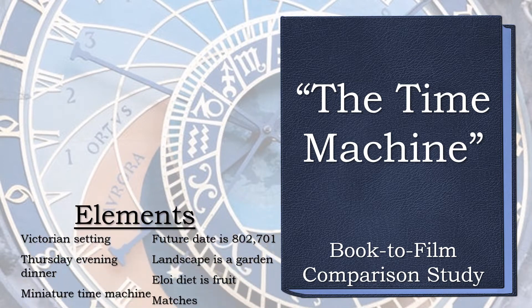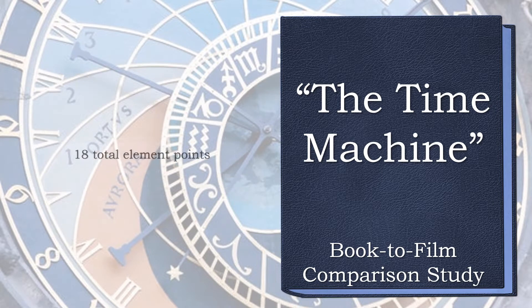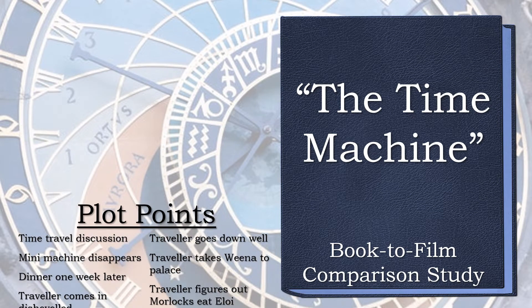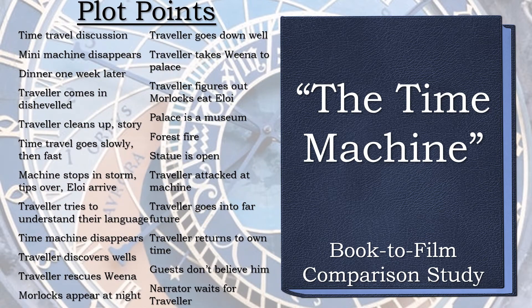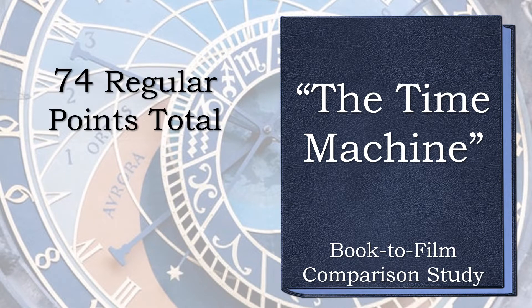For elements, points are awarded if an element is present — a future setting, for example. Partial points can be given, for example, the type of material used in the future statue. There are 18 possible element points. For plot points, points are given if the plot point happens. Bonus points are given if a detail is present in the plot point, such as the wells discovered being rimmed with bronze. There are 30 possible plot point points, and 74 possible regular points. Other bonus points may be given for anything not in the three main categories that shows an attention to detail to the book.